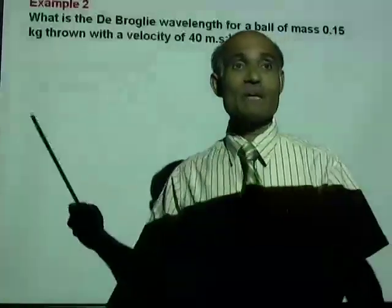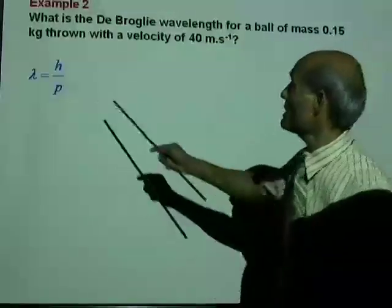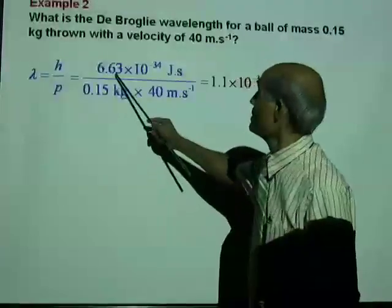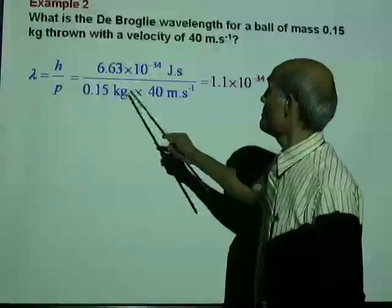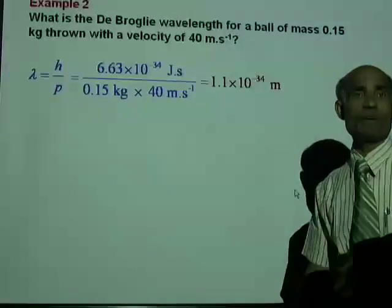Lambda equal to H over MV. P equal to MV. So H, we know, M and V are given. And look at that wavelength.